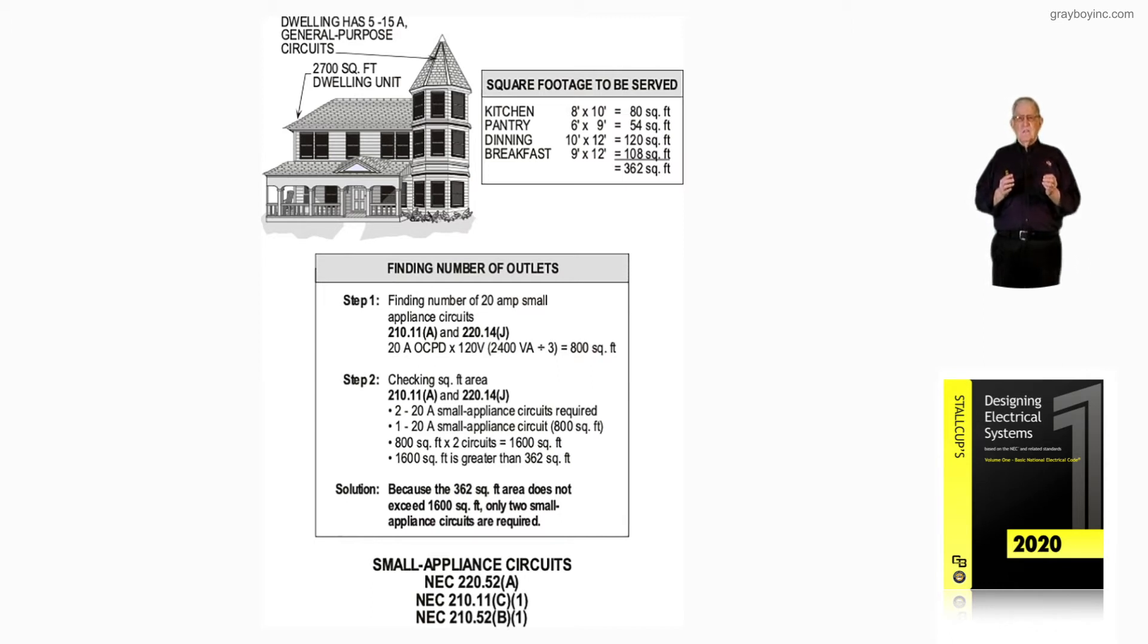That's our second set of circuits that we're looking at, and this illustration here deals with small appliance circuits, in accordance with 210.52a, 210.11c1, as well as 210.52b1. This is determining the number of circuits.